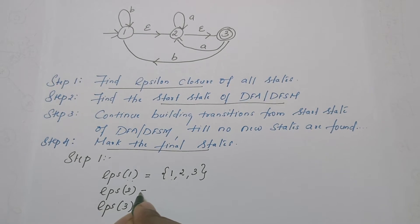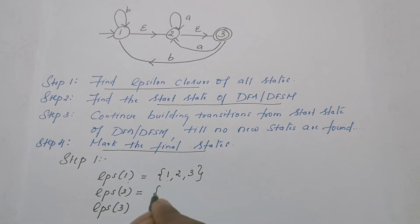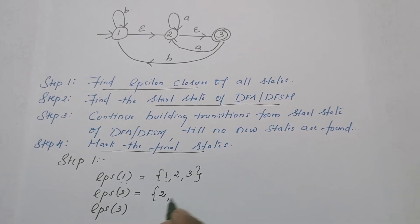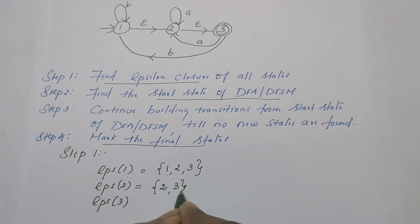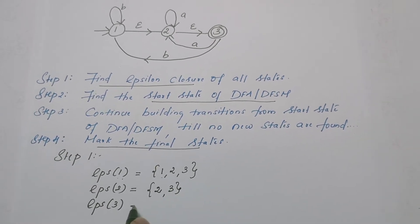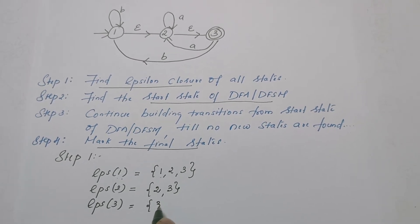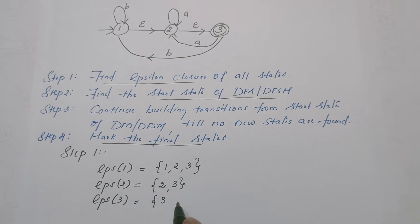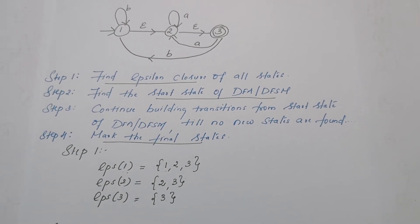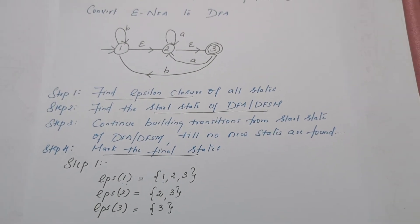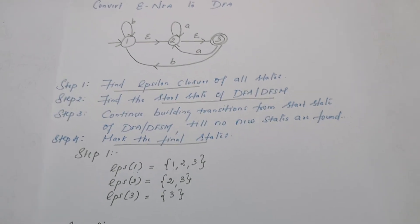Now let us identify Epsilon closure of state 2. Include 2 first; from 2 on Epsilon it reaches state 3. So Epsilon closure of 2 is {2, 3}. Epsilon closure of state 3: by default we write 3, and from 3 there are no further Epsilon transitions, so it is just {3}. Step 1 is complete — we have identified the Epsilon closures of all states: 1, 2, and 3.